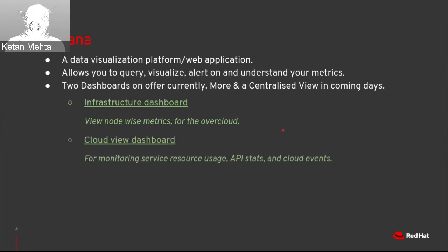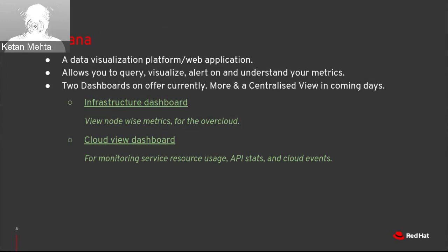Then you have the cloud view dashboard, used for monitoring service resource usage. For example, if you have Horizon, a lot of containers and services, and you want to see their usage and number of resources they are consuming, this is the place. In earlier OpenStack versions, we saw Neutron API consuming a lot of CPU. With this dashboard in place, you go there, see what amount of memory, CPU, or other things your Neutron API is using, figure that out straightaway, and decide: yes, this is the problem and try to fix it. You can also view API stats, cloud events, and a lot of other things.